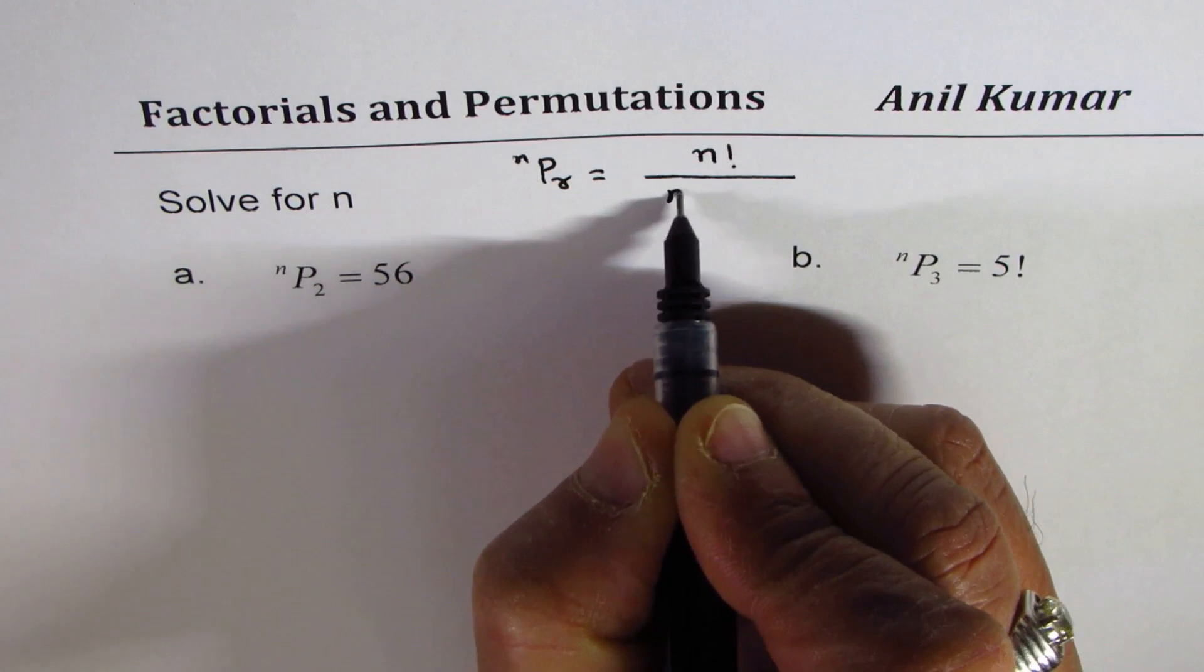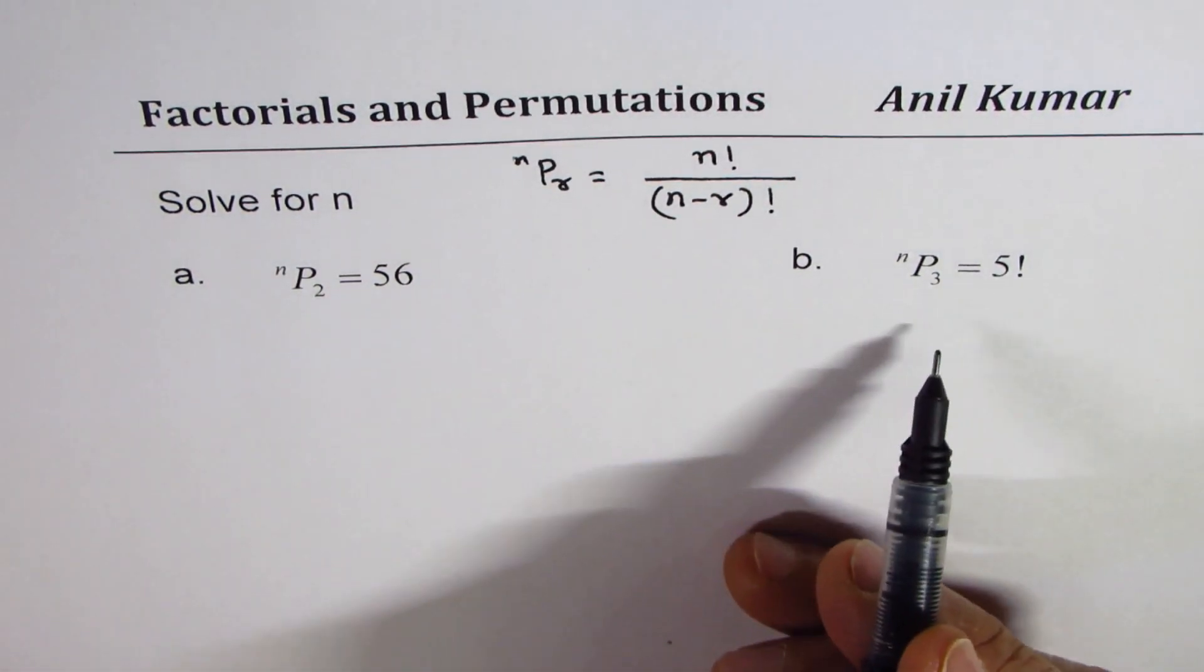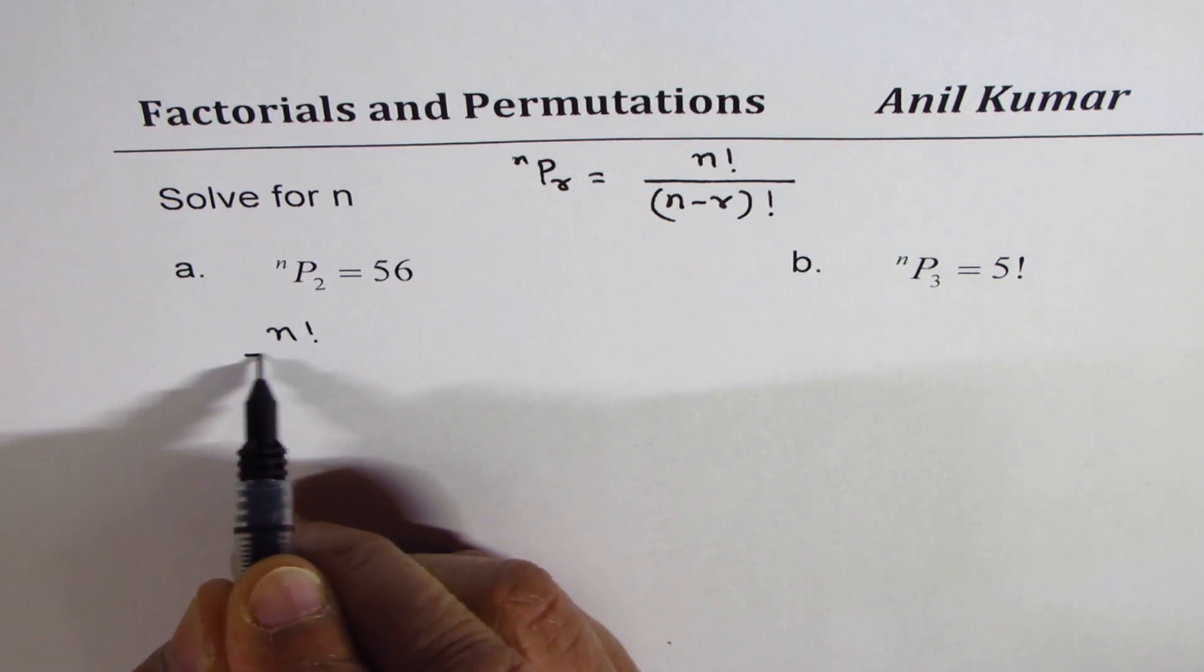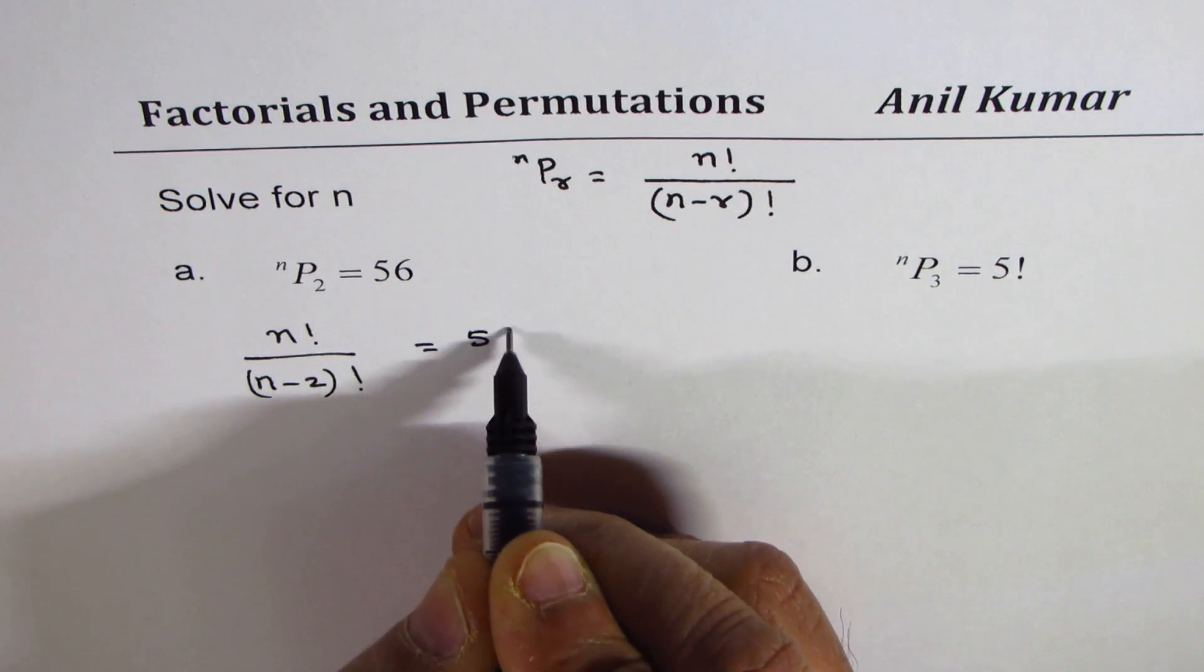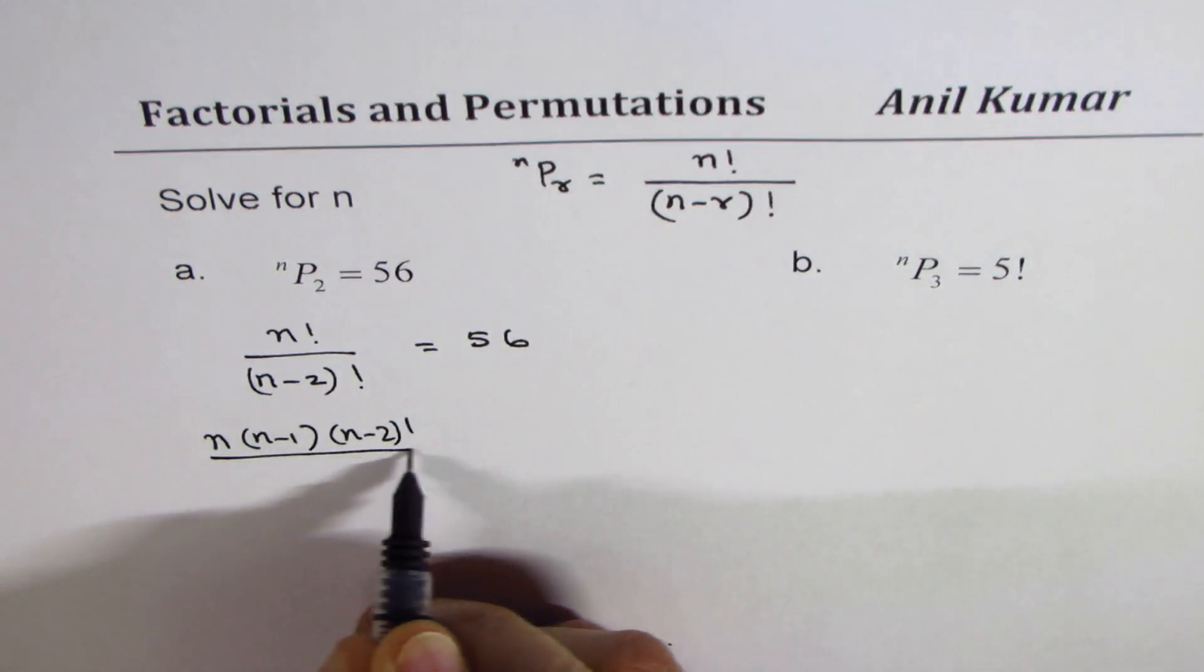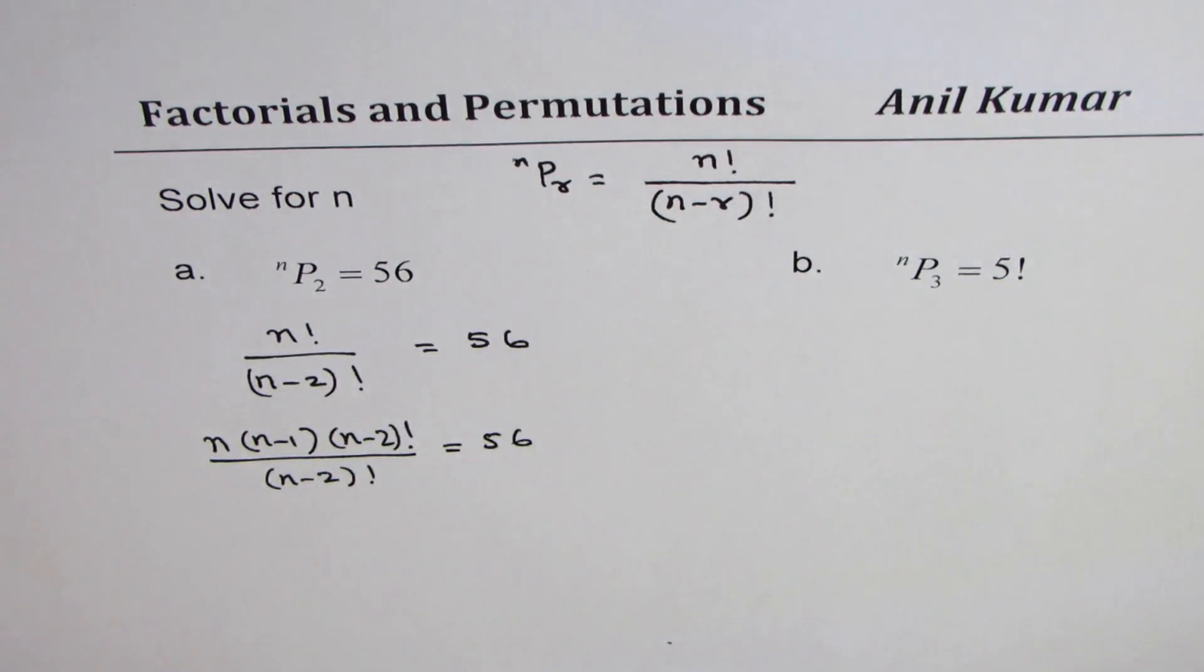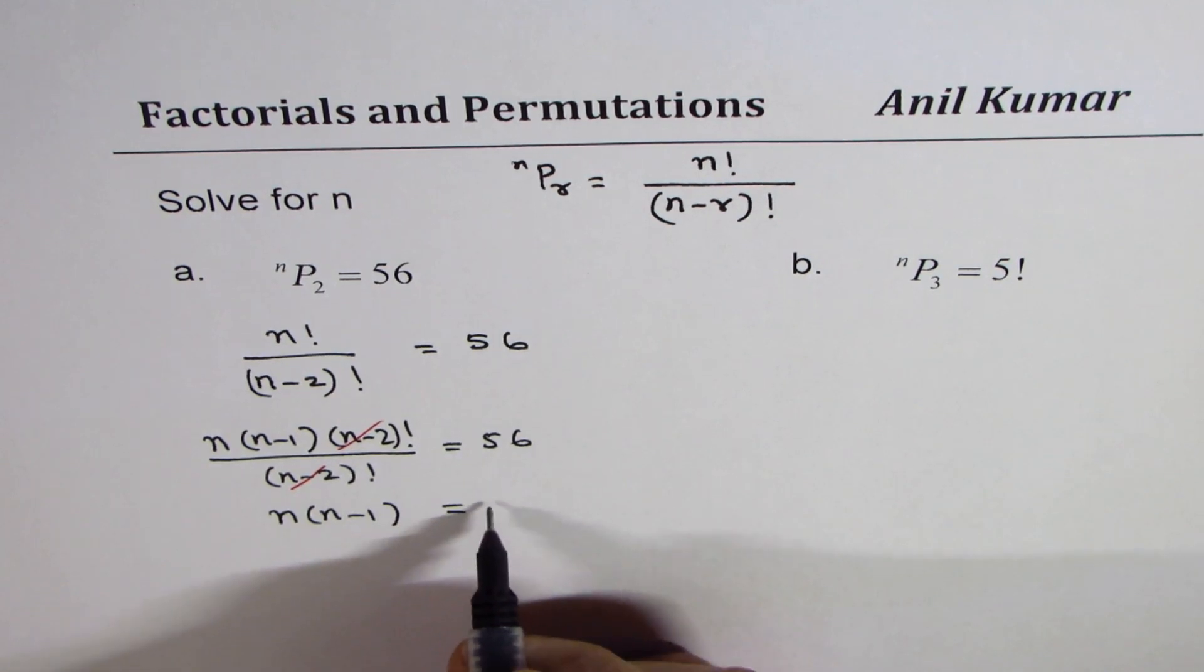We know the general formula for nPr is n factorial divided by n minus r factorial. So we can use this formula to solve these equations. The first one here will be n factorial divided by n minus 2 factorial equals to 56, and that gives us n times n minus 1 times n minus 2 factorial divided by n minus 2 factorial equals to 56. n minus 2 factorial cancels out, so we are left with n times n minus 1 equals to 56.